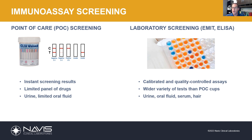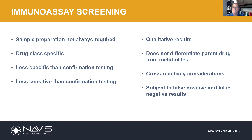The first step in any toxicology drug test is often an immunoassay screening. Immunoassay screens come in lots of different varieties. They could be the instant point-of-care cups that are used in the field. It could also be laboratory-based screening, which has a wider variety of test options and can be applied to serum and hair, as well as routinely to oral fluid and urine. In either case, these tests are often performed directly in the sample, meaning sample preparation is not always required.